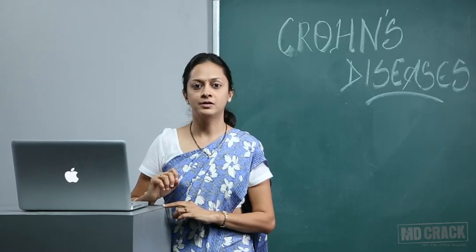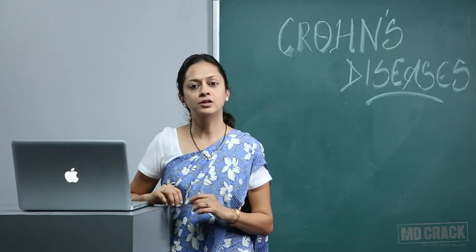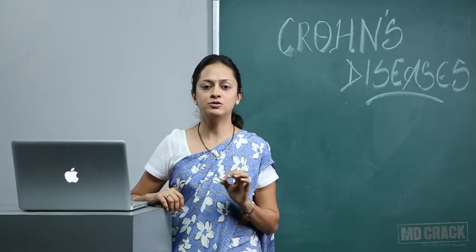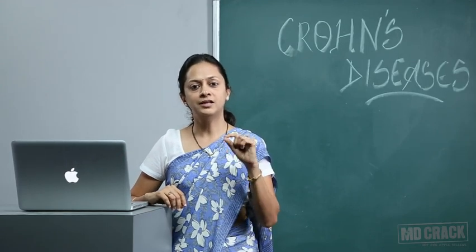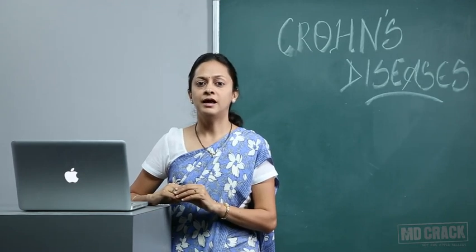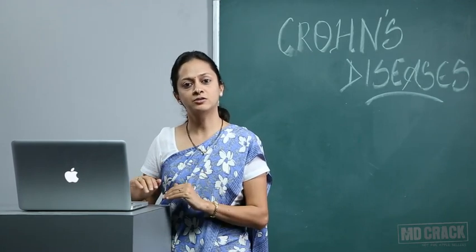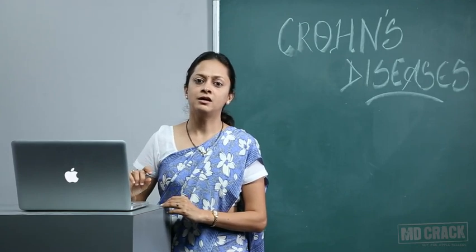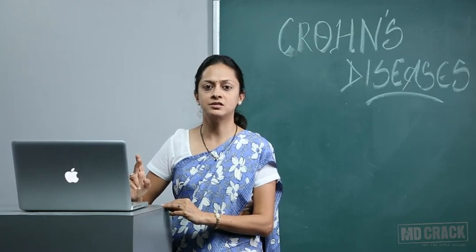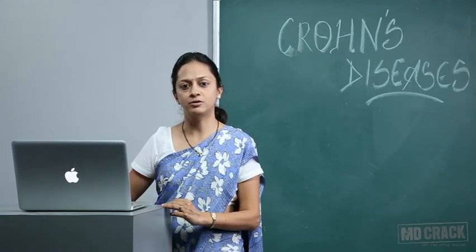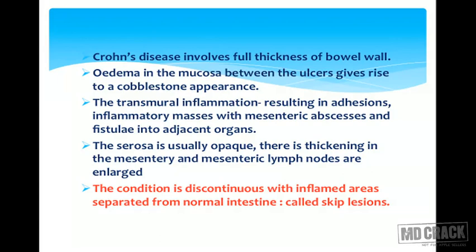Mainly the small and large intestine. In ulcerative colitis, only mucosa and submucosa are involved, whereas in Crohn's the total complete layer — mucosa, submucosa, as well as the muscular coat — all coats of the intestine are involved. Crohn's disease involves the full thickness of the bowel wall, so edema in the mucosa between the ulcers gives rise to a cobblestone appearance.